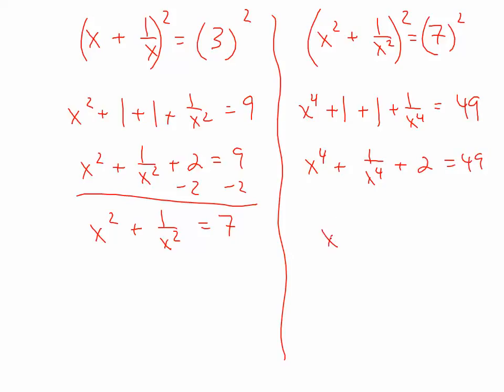Scooting the 2 over, and I got myself 47 is what I got. Now, again, all this is because x plus 1 over x equals 3.